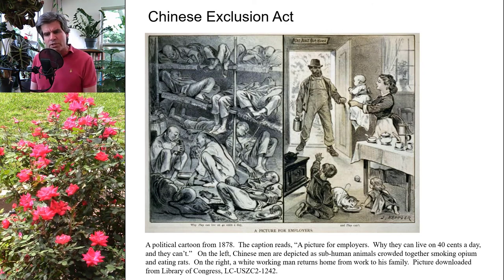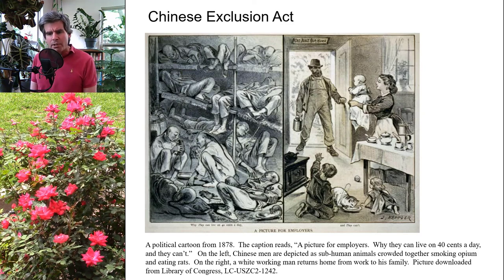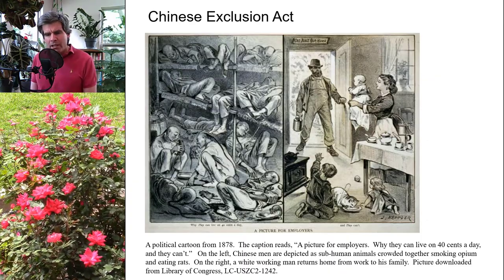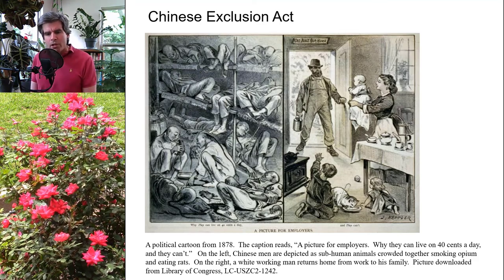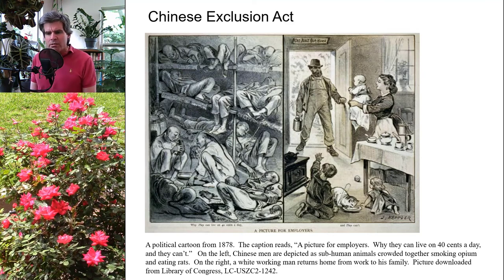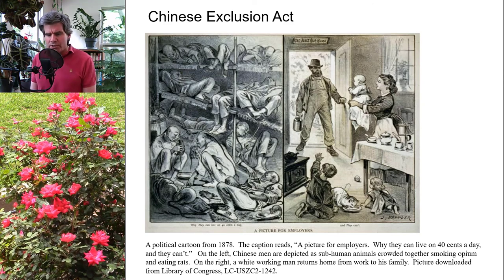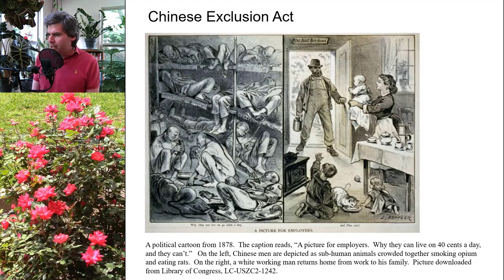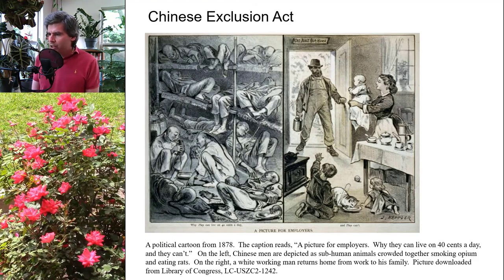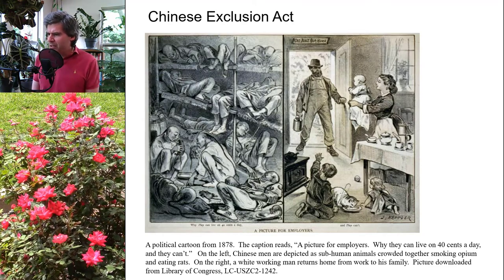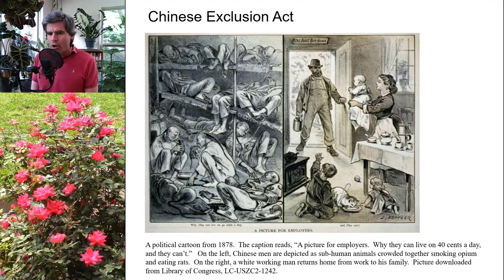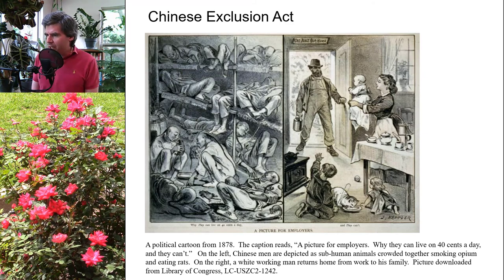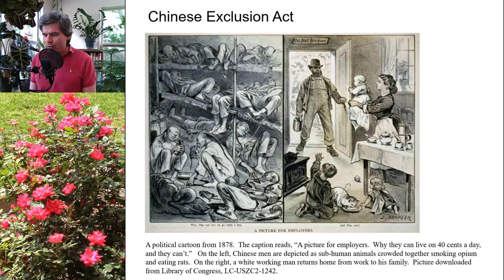Chinese culture and language seemed strange and alien to white people, and the primary complaint was that because Chinese people were willing to work for extremely low pay, they were taking jobs and leaving white people out of work. Chinese people were often portrayed as ugly, dirty, and subhuman. One example on screen is a political cartoon from 1878 depicting a group of Chinese men who look subhuman — smoking opium and eating rats — alongside a white working man returning home to his family. The caption reads: 'A picture for employers — why they can live on 40 cents a day' referring to the Chinese men, 'and they can't,' referring to the white family.